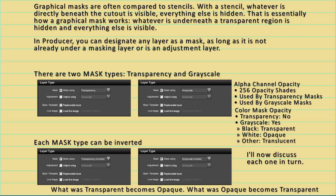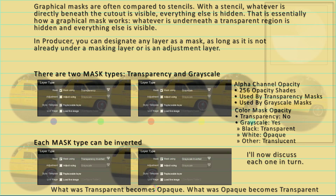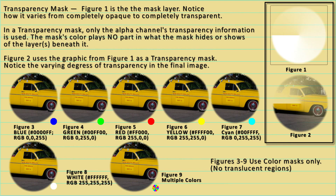I'll discuss each of the mask types and their inverted forms. This is the transparency mask. Figure one is the actual mask layer — notice that it varies from completely opaque to completely transparent. When it's used in the mask set, the result is shown in figure two. Figures three through nine show a transparency mask using color, and you'll notice that the variation doesn't change at all, so color doesn't really matter in a transparency mask.